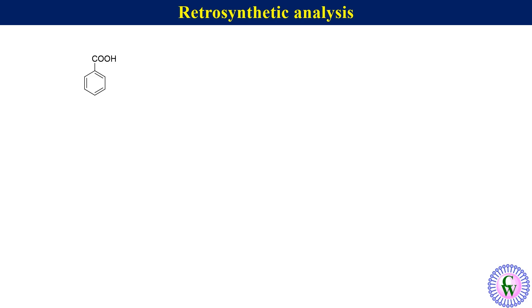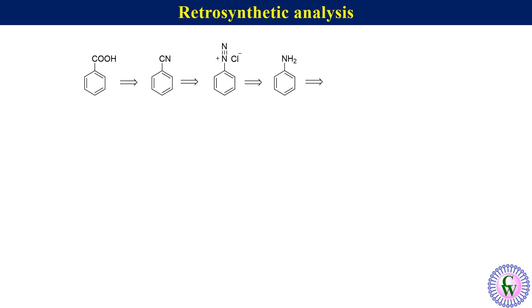Before going to the synthetic route, let's do retrosynthetic analysis which will help us in getting the synthetic route. Benzoic acid can be obtained from the hydrolysis of benzonitrile, which can be obtained from the Sandmeyer reaction of benzene diazonium salt. This diazonium salt can be obtained from the diazotization of aniline, which in turn can be obtained from the reduction of nitrobenzene.